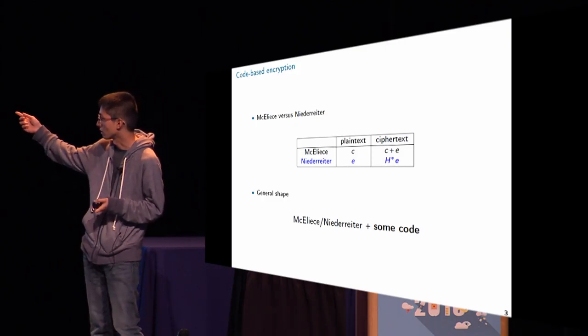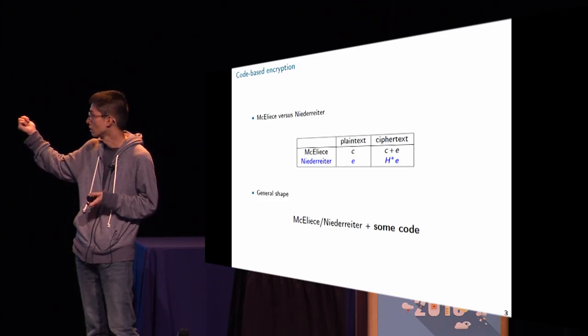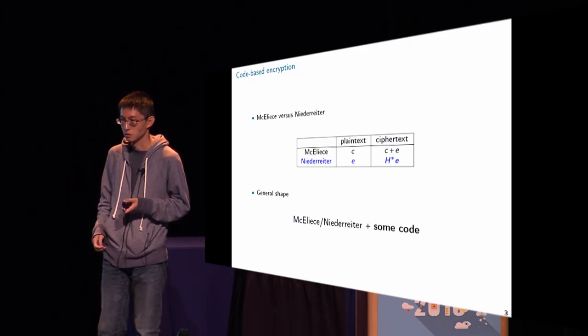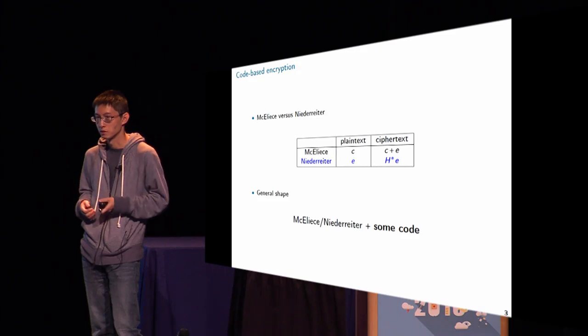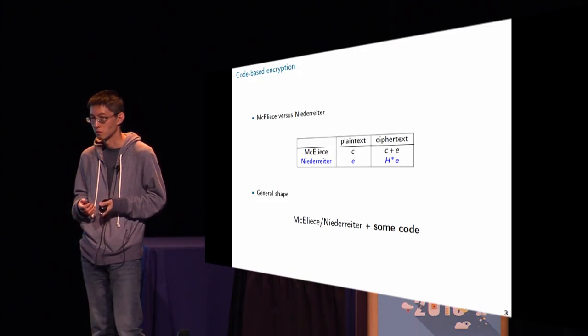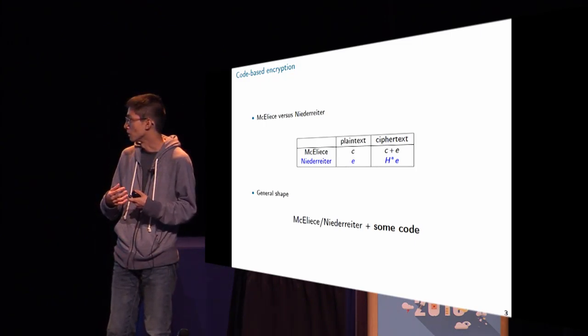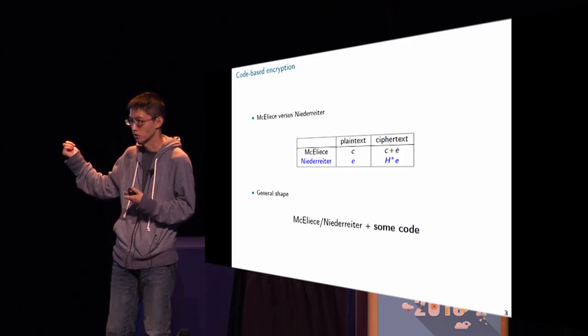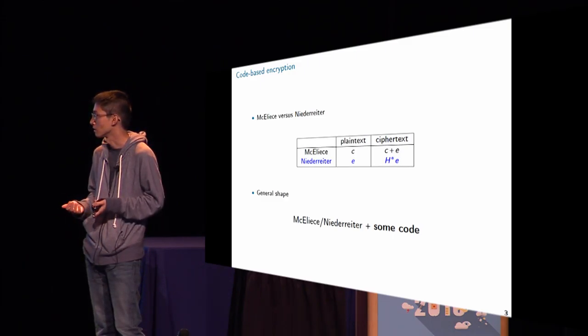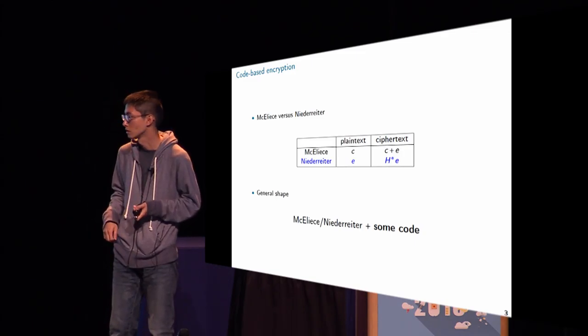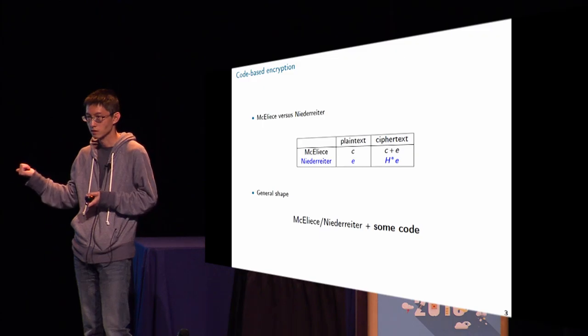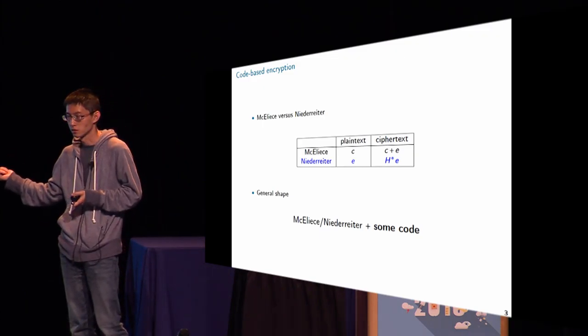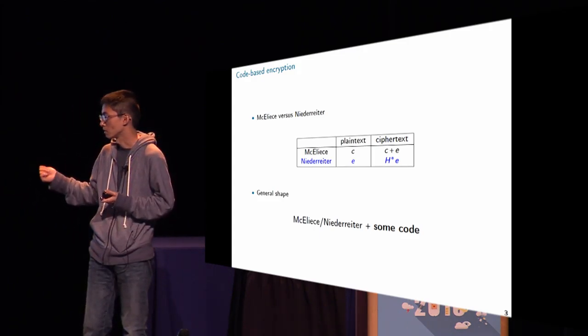And please notice that here I put a star on this parity check matrix H because this is a crypto scheme, so we want that the public key did not have the structure of the underlying code. So we somehow scramble the parity check matrix a little bit, and then this matrix becomes our public key. So for the receiver who has a structured parity check matrix H, he can do decoding and decryption. And that's roughly how it works. And in general, code-based encryptions are very simple in some sense because they just either use McEliece or Niederreiter together with some code. And whether the scheme is secure or not depends on which code you're using.